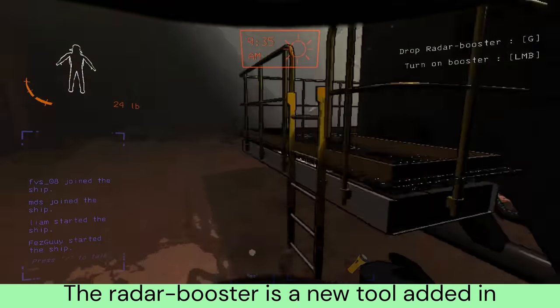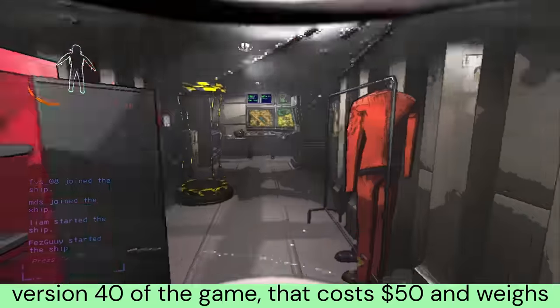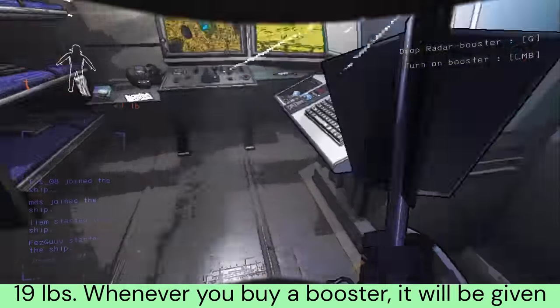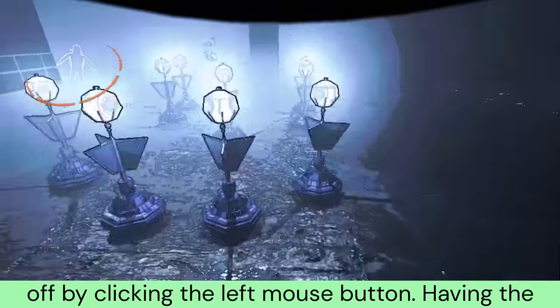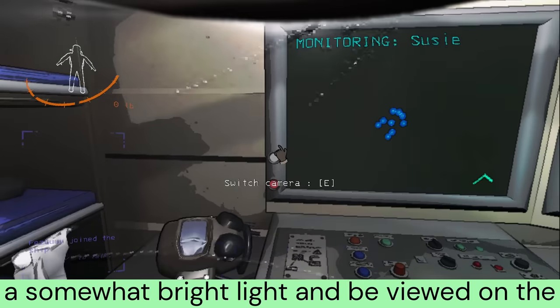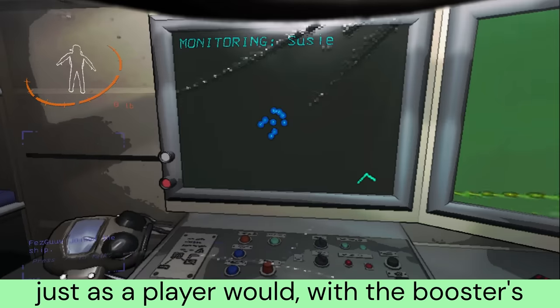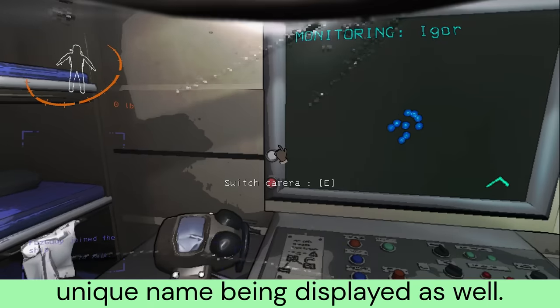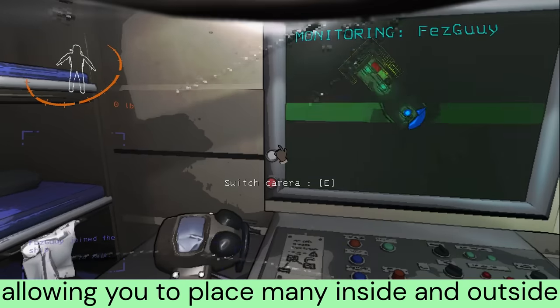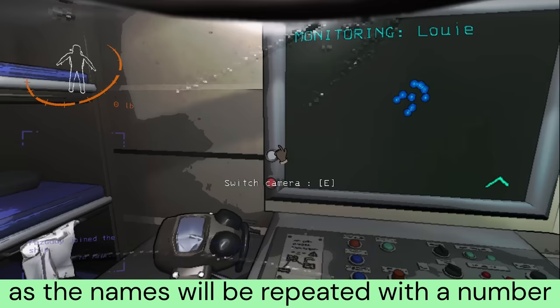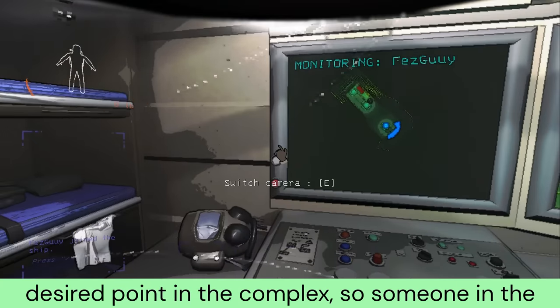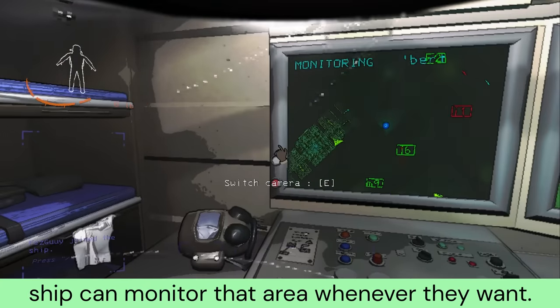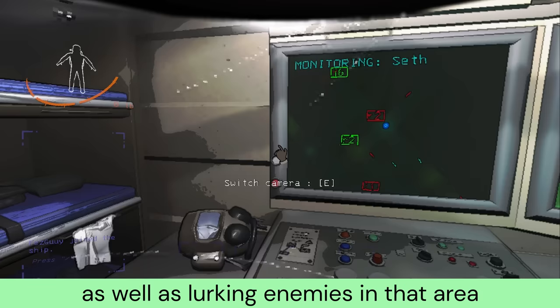The radar booster is a new tool added in version 40 of the game that costs $50 and weighs 19 pounds. Whenever you buy a booster, it will be given a random name, such as Gilbert. When held, the radar booster can be turned on and off by clicking the left mouse button. Having the booster on will allow it to emit a somewhat bright light and be viewed on the monitor system in the ship, just as a player would, with the booster's unique name being displayed as well.